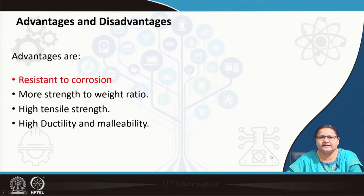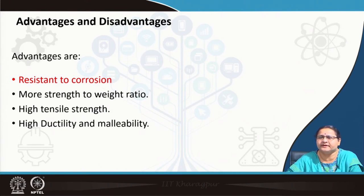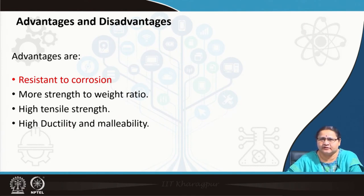The advantages are: resistance to corrosion; higher strength-to-weight ratio, meaning they are light; high tensile strength — though not comparable to ferrous metals; they are also ductile and malleable. So you can have sheet forms and plate forms, as seen with ferrous metals, and they can be drawn into wires.